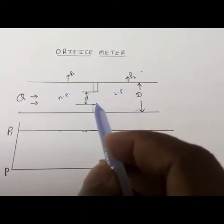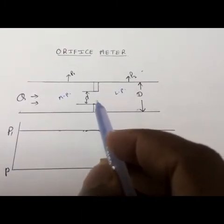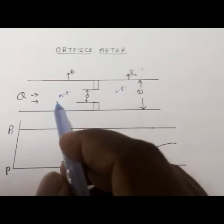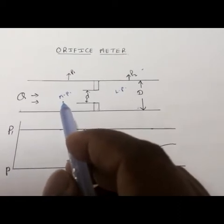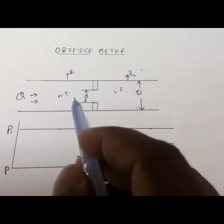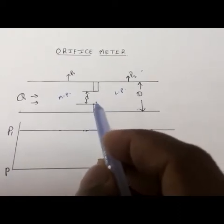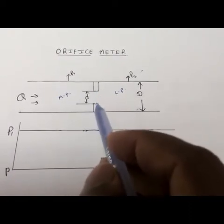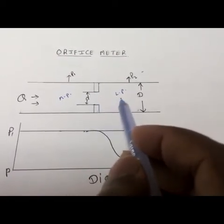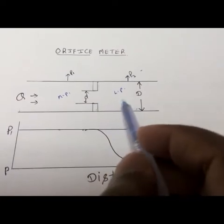After passing through the orifice meter, we have higher pressure before it, but after passing through the orifice meter we have low pressure.